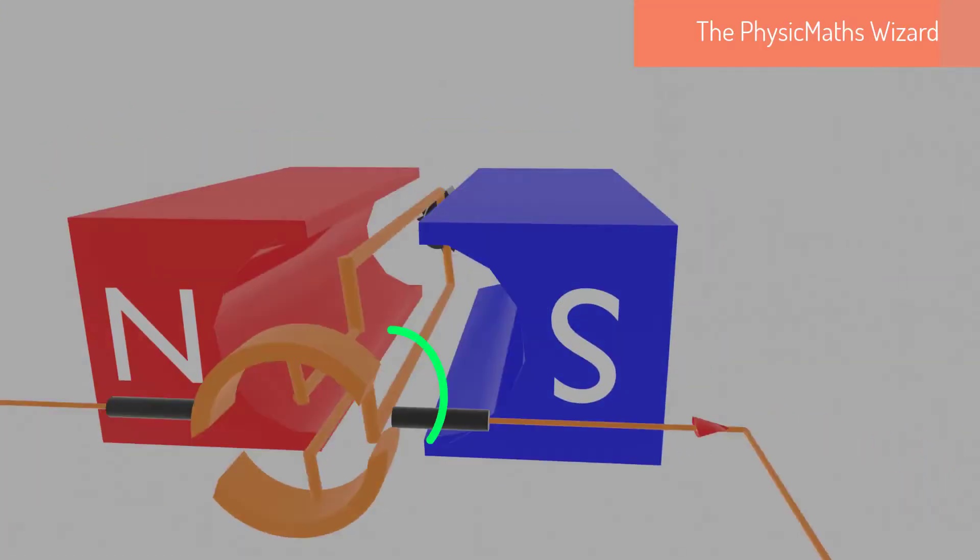When the coil is in a vertical position, there is no contact between the carbon brushes and the commutator. No current flows through the coil, and hence no Lorentz force. The coil, however, is pushed over due to its momentum and inertia.